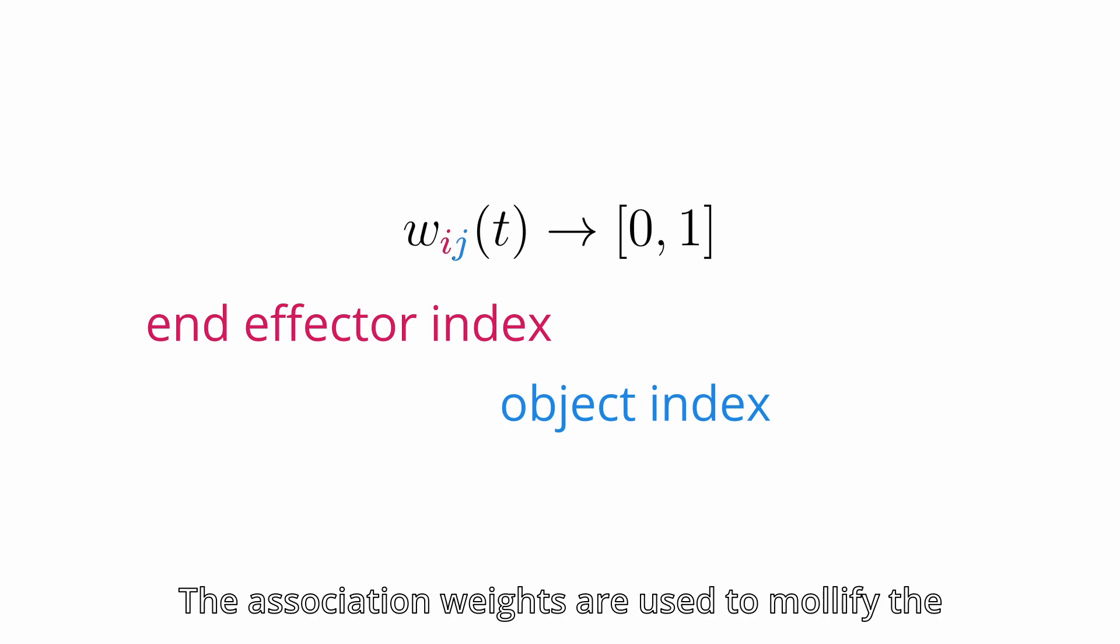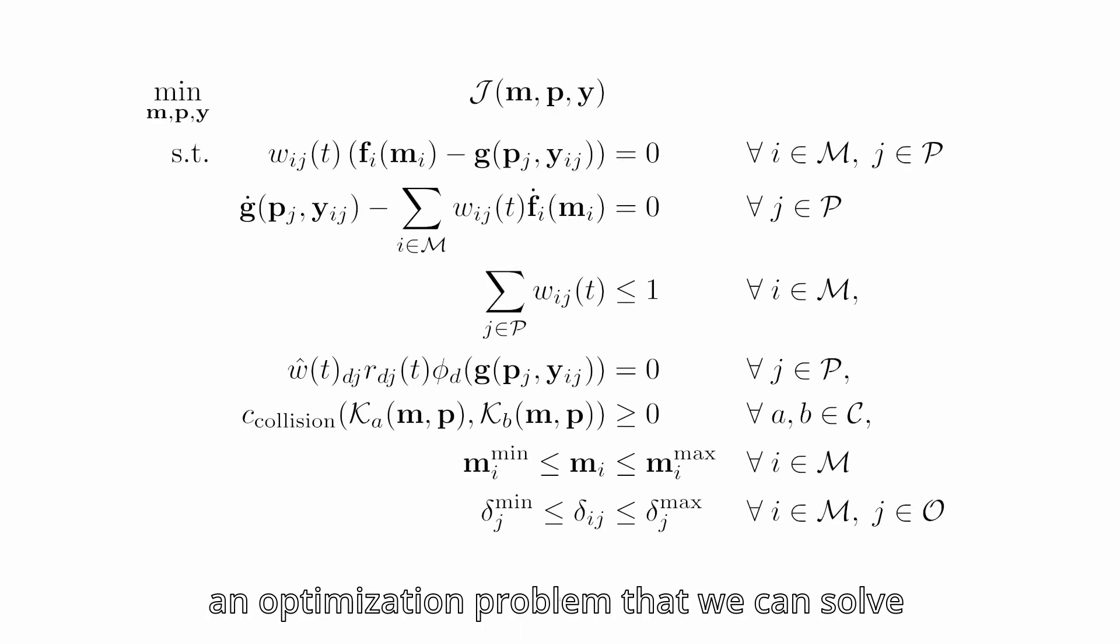The association weights are used to mollify the kinematic switches and to implicitly describe pick-and-place tasks. This enables us to incorporate the kinematic switches into an optimization problem that we can solve using gradient-based optimization methods.